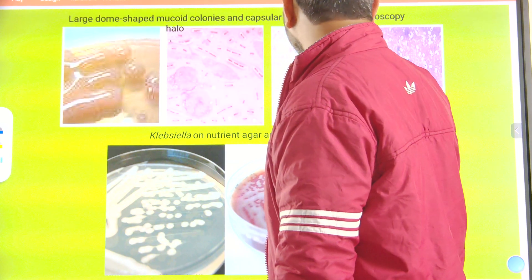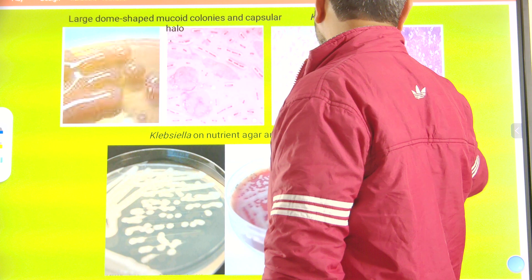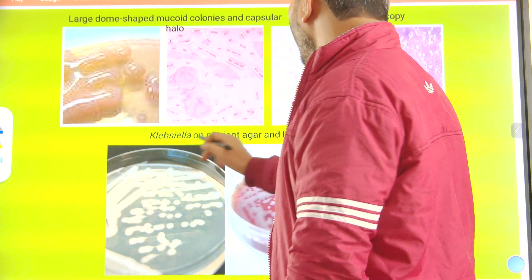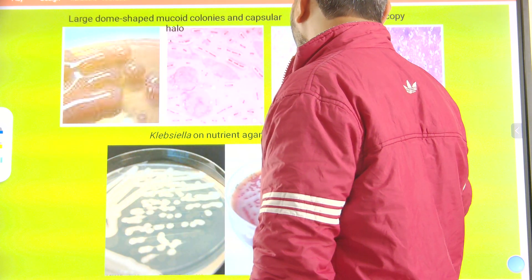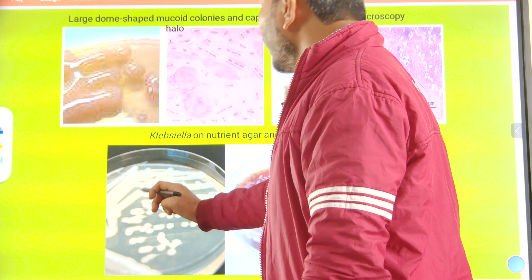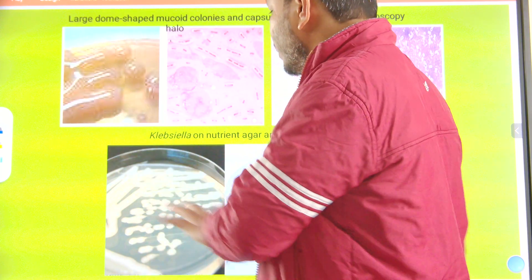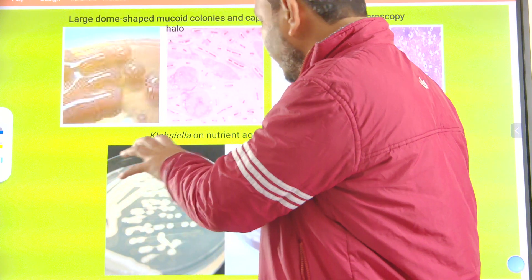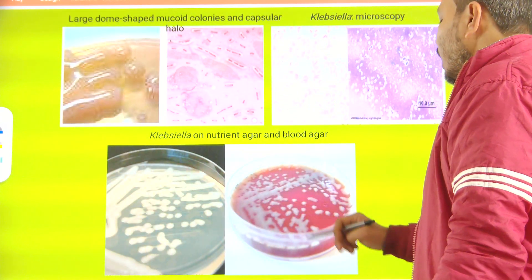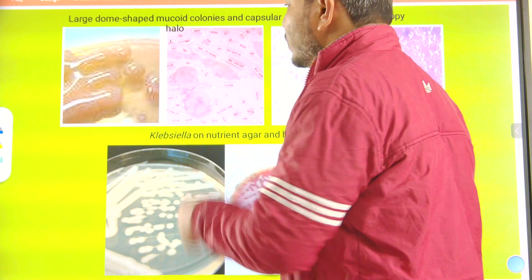The capsular halo is visible in microscopy as a white zone. On nutrient agar or blood agar, the colonies appear as large dome-shaped structures. On blood agar, the sticky colonies are again prominent.